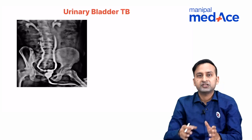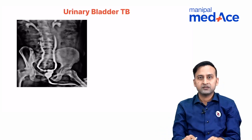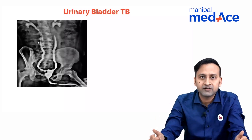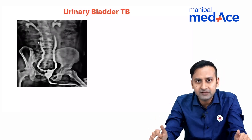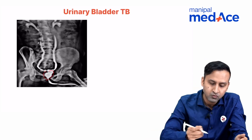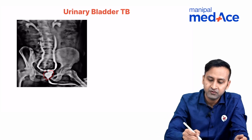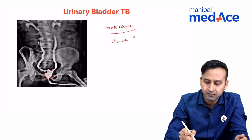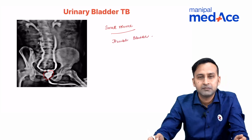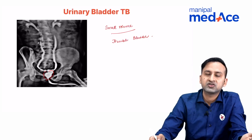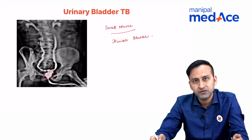Now suppose the infection has reached into the bladder. The bacteria eat the bladder from here and there, and the body incites a fibrotic response. The entire urinary bladder undergoes fibrosis on all aspects, resulting in a small-volume bladder. This small-volume, fibrosed bladder is called the thimble bladder. These are all the changes expected as genitourinary tuberculosis progresses from kidneys to ureter and into the urinary bladder.